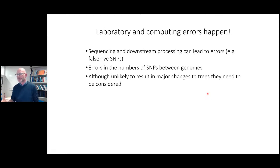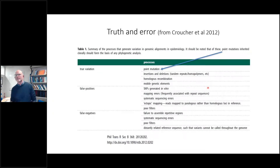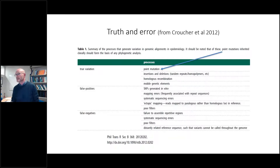Laboratory and computing errors happen — you can get false positive SNPs and false negative SNPs, which can affect your alleles too. Errors between genomes are unlikely to result in major changes to trees, but they are worth noting. Point mutations inherited via replication should form the basis of your phylogenetic analysis. Growing bugs in vitro can generate spurious SNPs as false positives, and failure to assemble repeat regions can result in false negatives — areas where you don't identify SNPs that should be present.